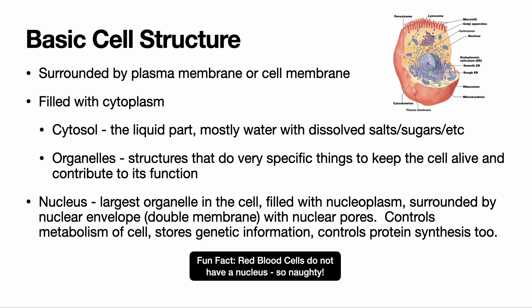The largest organelle in most cells is the nucleus. It is surrounded by the nuclear envelope and filled with nucleoplasm. Its job is to control the metabolism or work of the cell — it stores genetic information and plays a very important role in protein synthesis. Interestingly, not all cells have a nucleus; red blood cells, for example, do not, which has big implications for the lifespan and function of the cell.